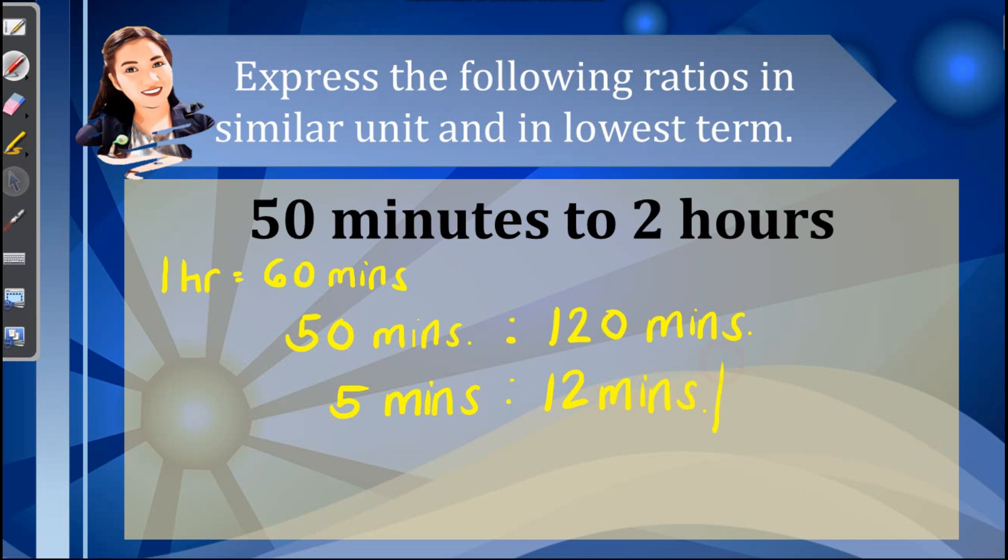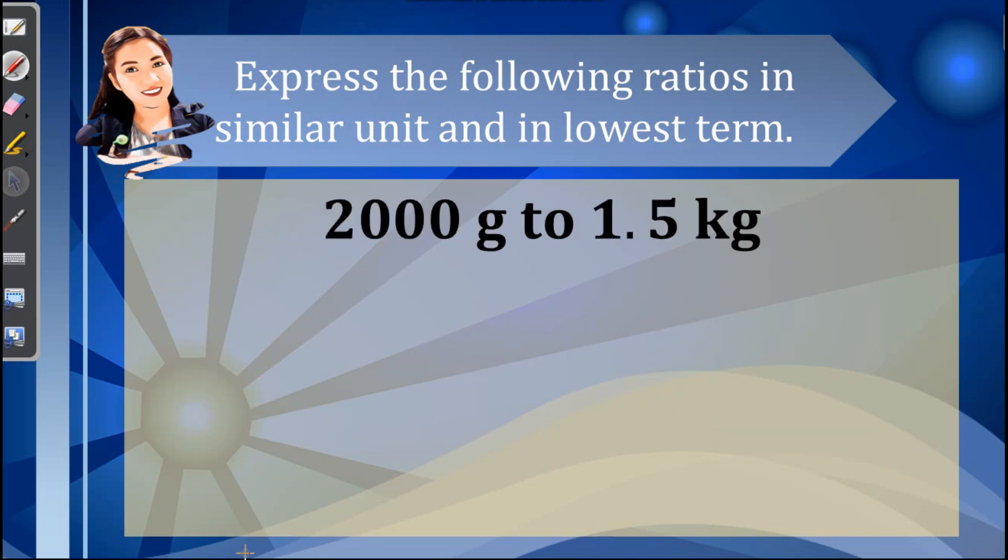Next item: express the ratio 2000 grams to 1.5 kilograms. Here let us convert kilograms to grams. Take note that 1 kilogram is equivalent to 1000 grams. So here we can have 2000 grams to 1500 grams. Simplify this by dividing both by 500, so we have 4 grams to 3 grams.